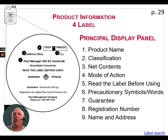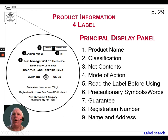You'll also see precautionary symbols and words on a label. In this example it's 'Warning Poison' and a caution symbol — a diamond around a skull and crossbones. You need to heed those warnings; that's your first clue as to what you need to be concerned about when using this product.